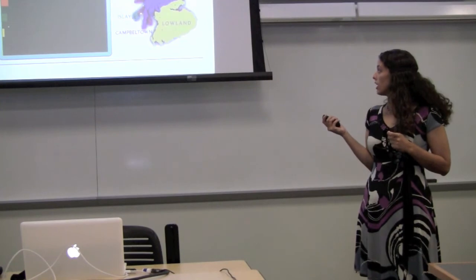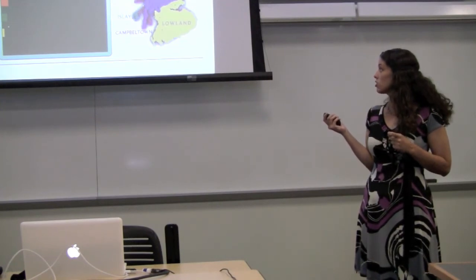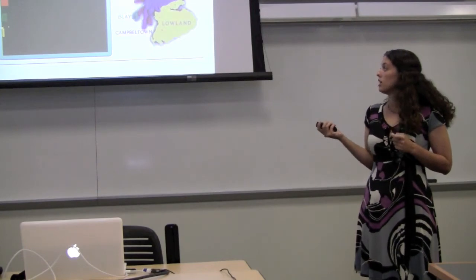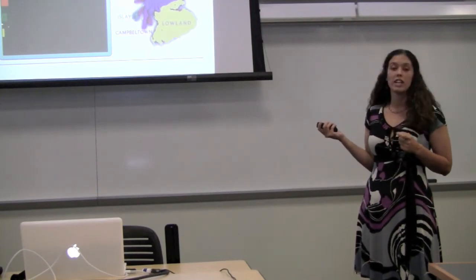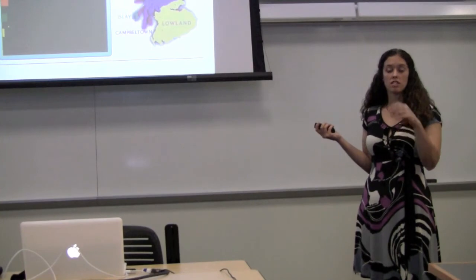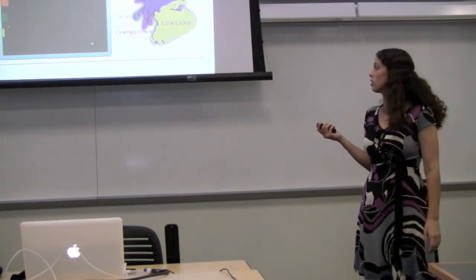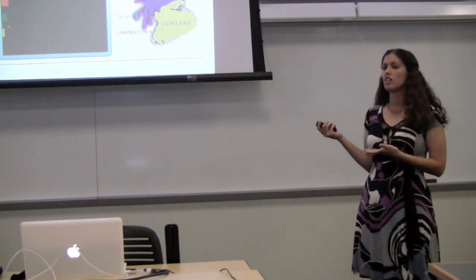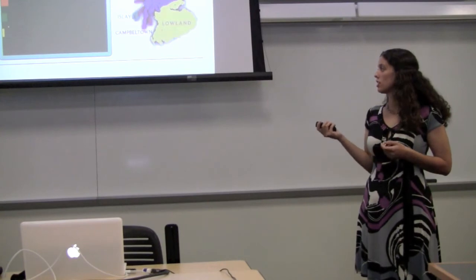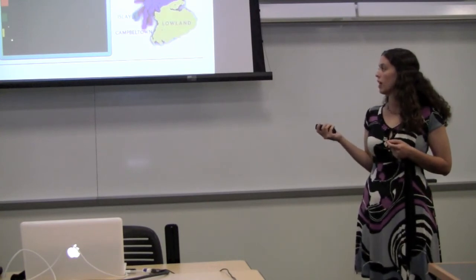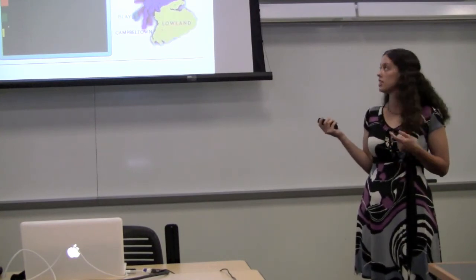So Balmore is here and Auchentoshan is here. Auchentoshan is right on the coast, so this is why it fell within the coastal regions, because it does lie right on the coast. So you can think of this graph as the distilleries at the bottom had more deuterium in their water than the distilleries at the top.